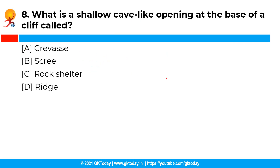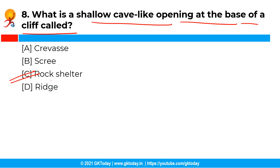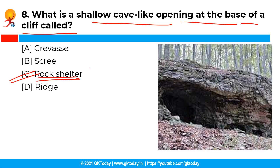The next question is: What is a shallow cave-like opening at the base of a cliff called? The correct answer is option C, that is rock shelter. Rock shelter, also known as rock house or bluff shelter, is a shallow cave-like opening at the base of a cliff. Most of them are found under waterfalls.